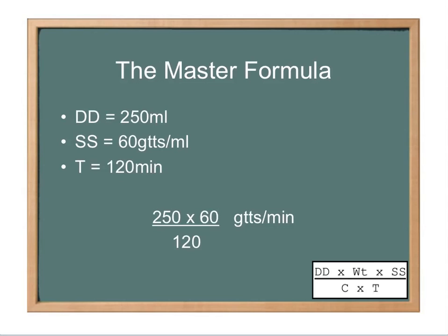So 250 times 60 over 120 is what we're left with. You can cross out a zero on top and a zero on the bottom. You're left with 250 times 6 over 12. Since 12 and 6 are both divisible by 6, we can go ahead and divide those, simplify a little bit.